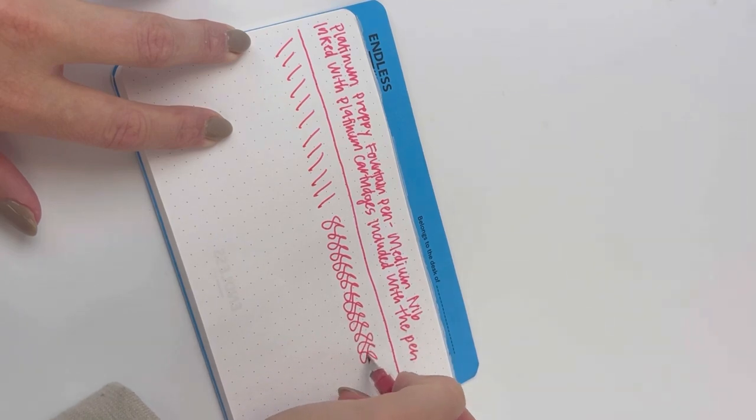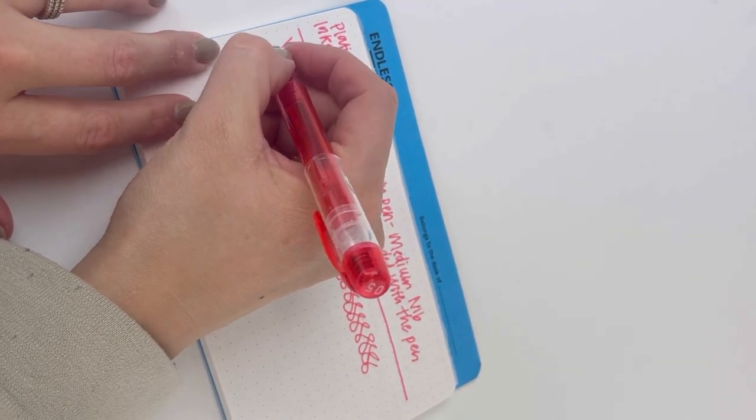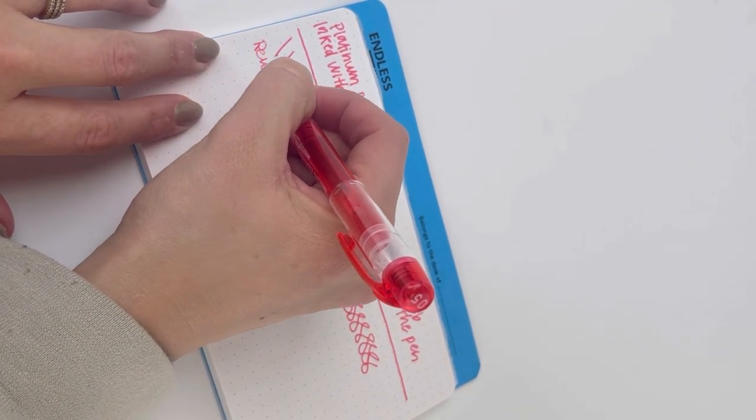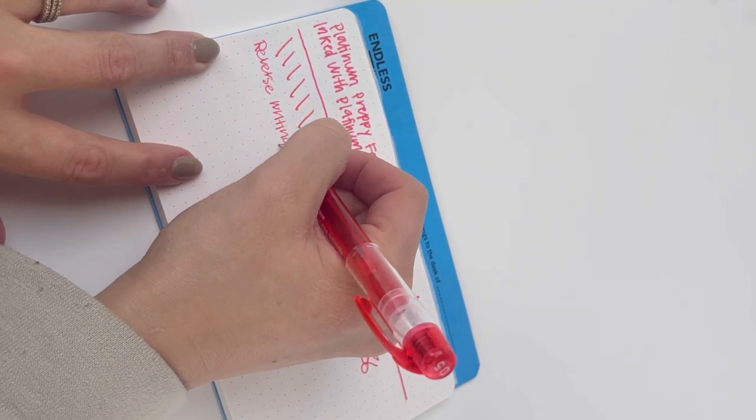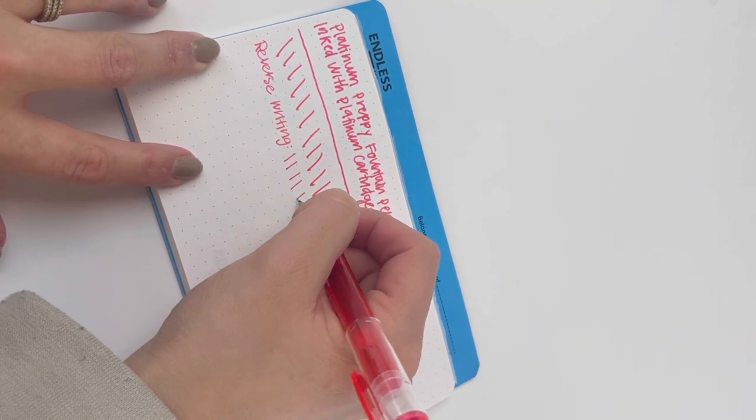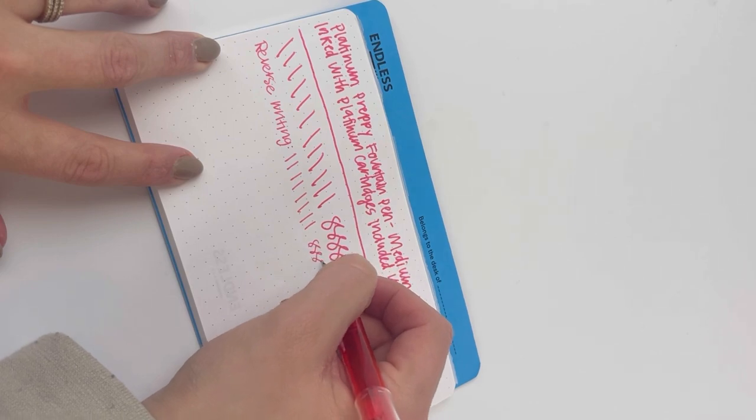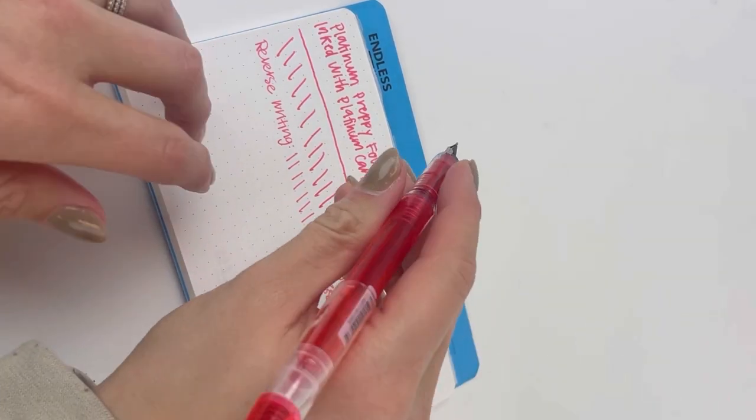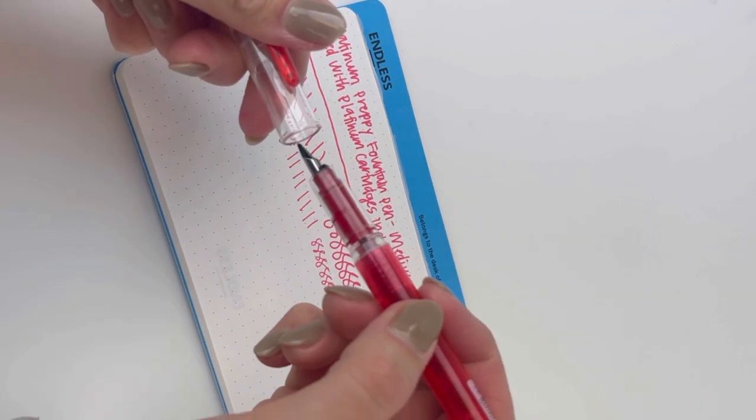In the writing sample here, you can see that we pulled out the red fountain pen with a medium nib, and we inked it with the ink cartridge that was included with the pen. When you purchase the Platinum Preppy fountain pen, your ink cartridge that's included is inside the barrel of the pen.